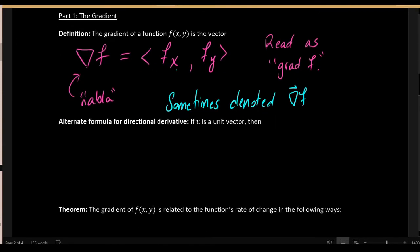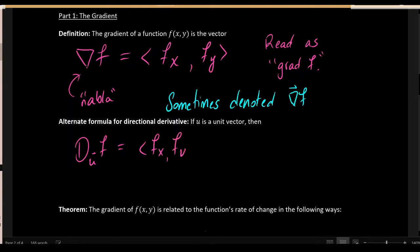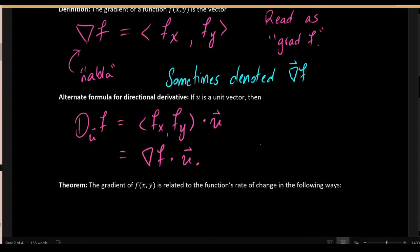This vector of partial derivatives fx and fy has actually shown up before when we were calculating the directional derivative. We can use the gradient vector to represent the directional derivative formula in a slightly different way. Instead of writing the partial derivatives dotted with unit vector u, we can write it more compactly as grad f dot u. This is an alternate way to express the formula for the directional derivative.